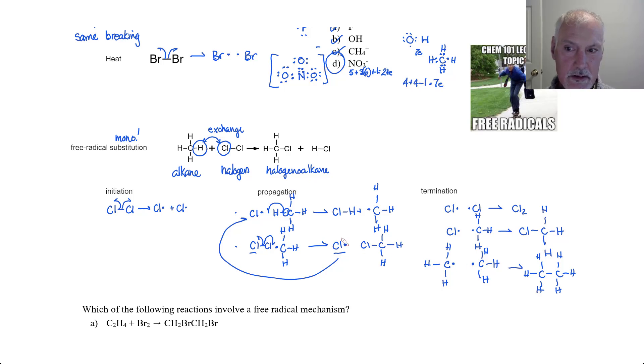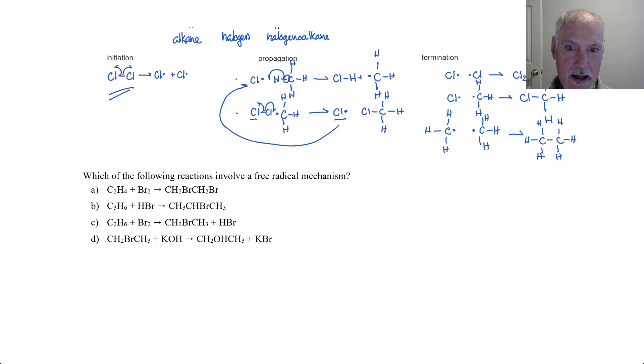So free radical substitution involves a substitution and exchange of atoms, but it occurs by what's called a free radical mechanism, which we see here in the initiation step. Let's see if we can identify which of these involves free radical mechanism. So the free radical mechanism would involve a halogen splitting. So it comes down to one of these two. Now, in a substitution reaction, what happens is we get an exchange between our alkane and our halogen. So one of the bromines would replace one of the hydrogens resulting in this second product. So this is an example of a free radical substitution reaction.